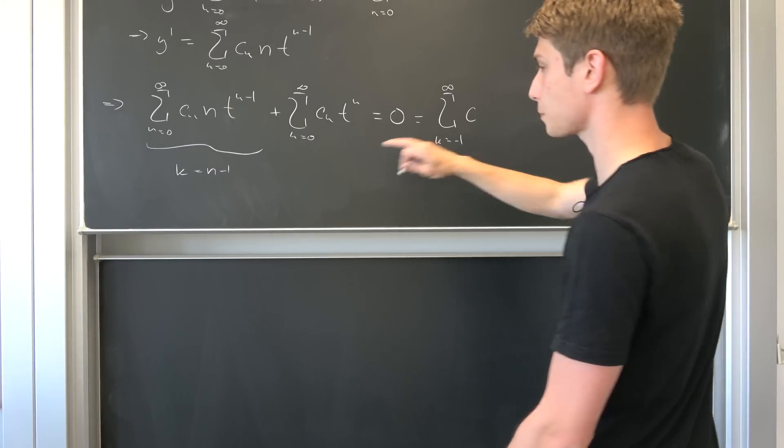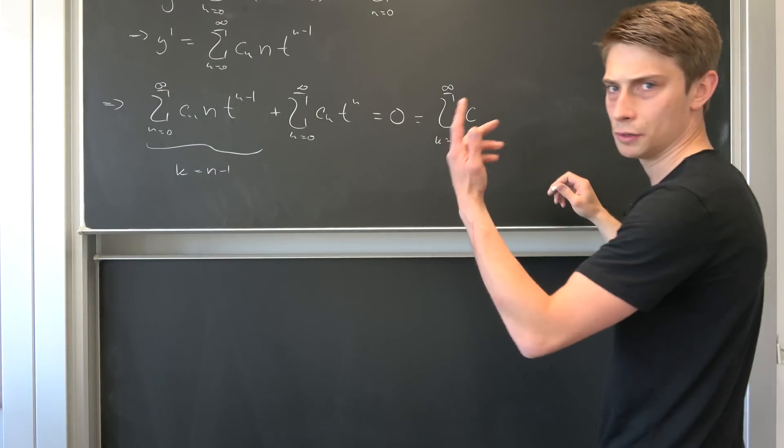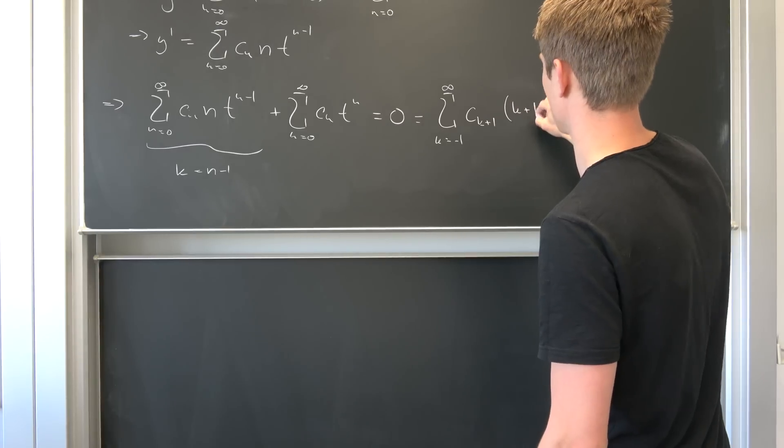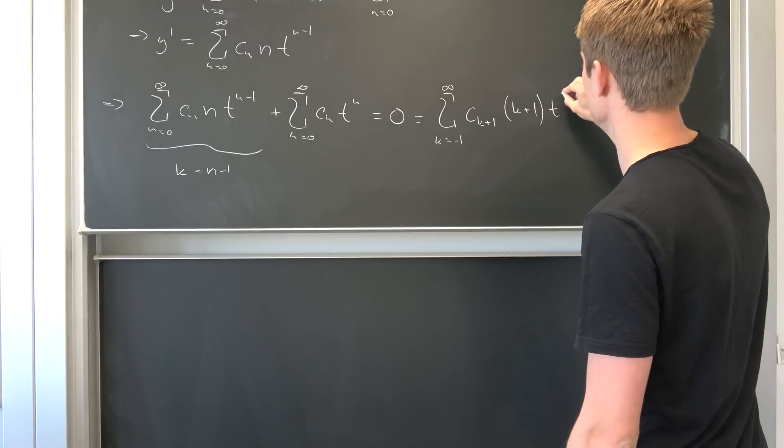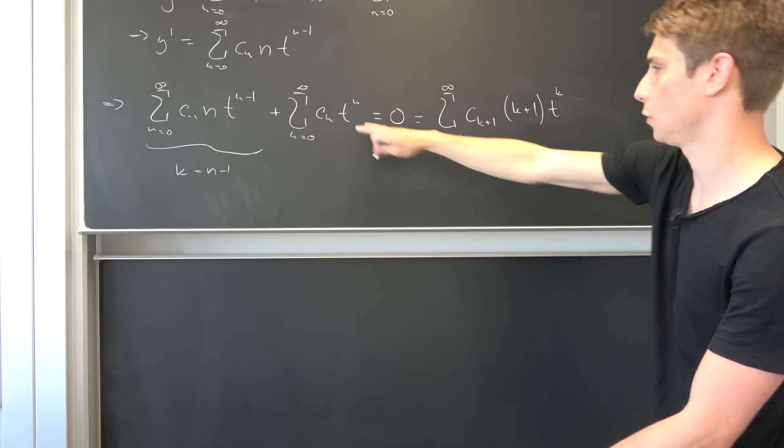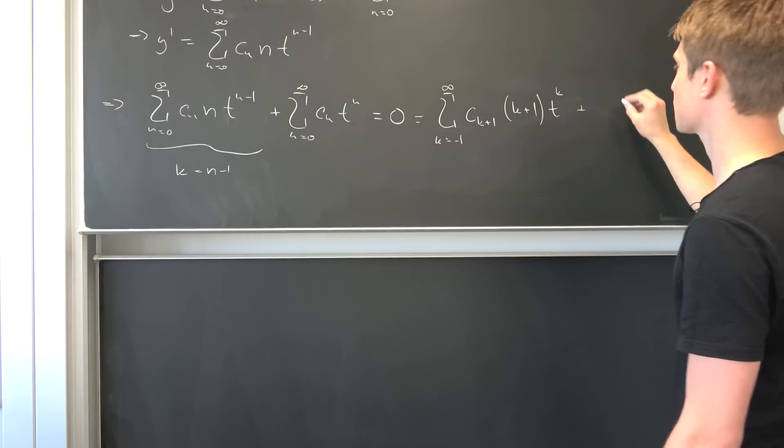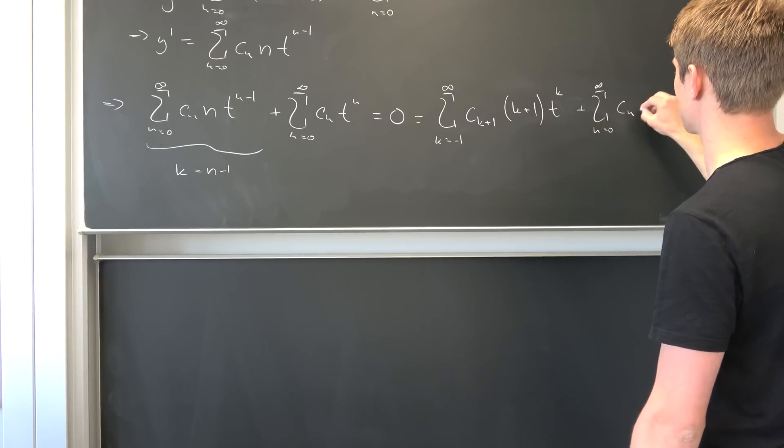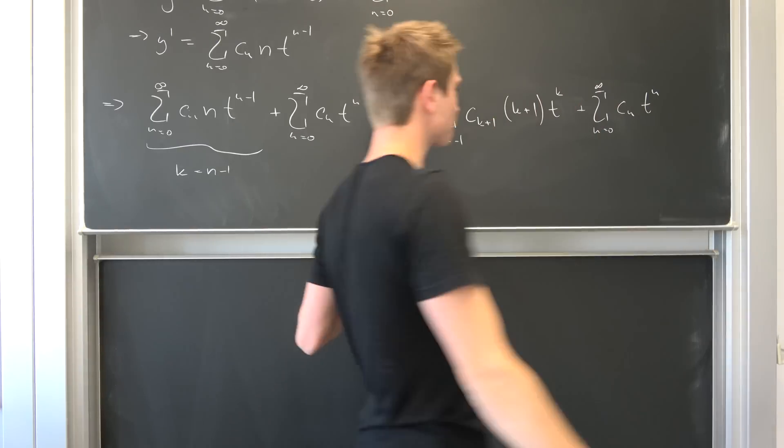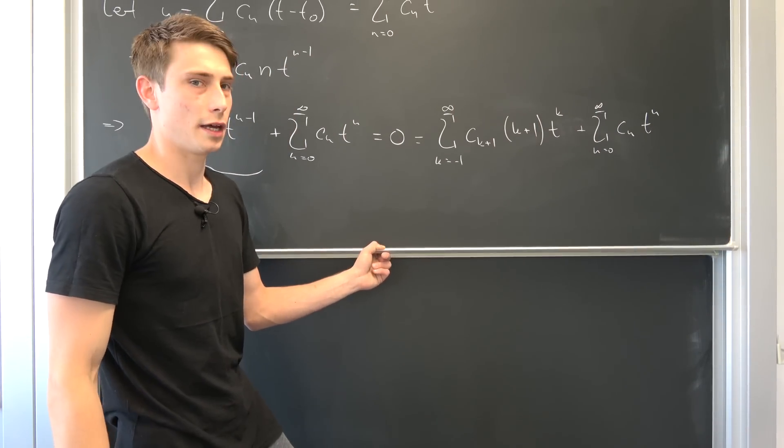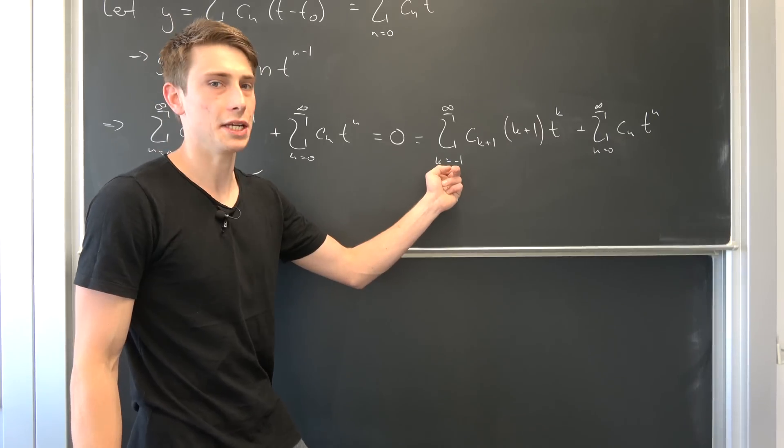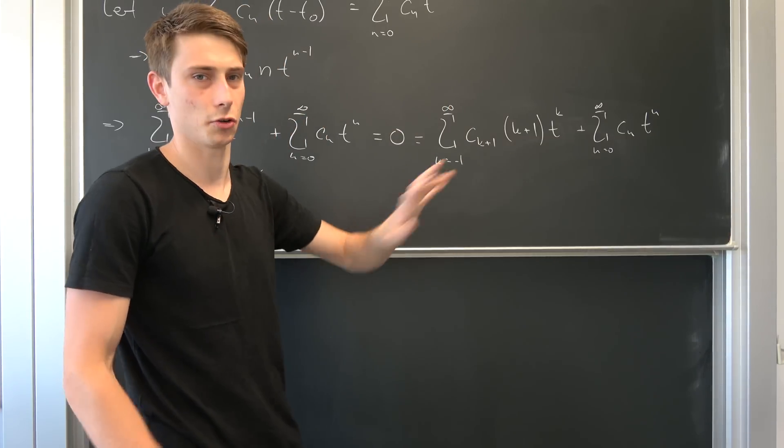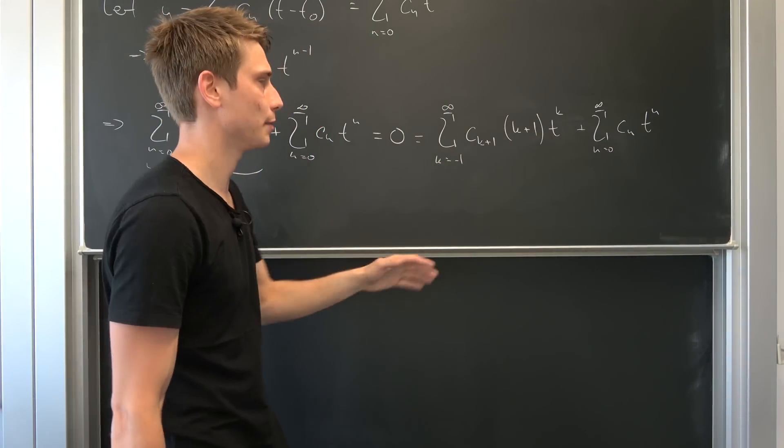But we don't have t to the nth power right here at the moment. What could we do? Well, we could shift the index a bit. So why not let some k equal to n minus 1. So that also means that now we have a sum going from k equals to minus 1, just like I said, it's going to look quite weird. I just want to show you the theory behind it. And now we have c k+1 and we also have a k+1 right here and we have t to the k. And also this stuff right here, plus we have a sum running from n equals 0 to infinity of those cn t to the nth power.